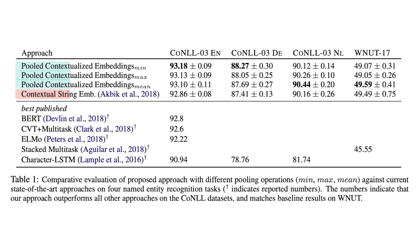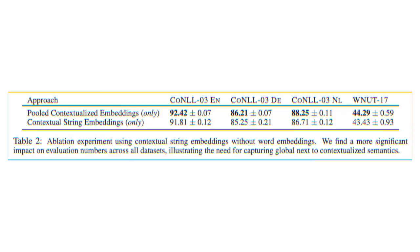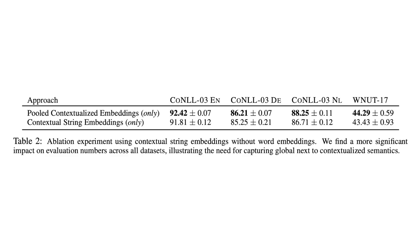Overall, the min pooling operation yielded the best results for English and German on CoNLL 2003, whereas the mean pooling operation yielded the best results for Dutch and the WNUT17 datasets. The paper also performed an ablation experiment using contextualized embeddings without word embeddings to better evaluate the impact of the proposed method. The results show a strong improvement against the baseline, indicating that pooled contextualized embeddings can capture the global semantics of words similarly to traditional word embeddings.